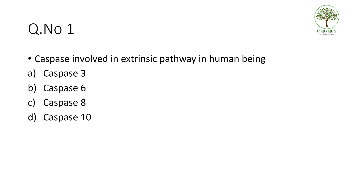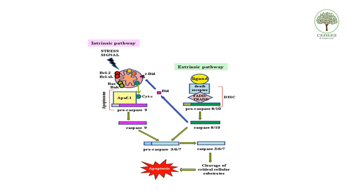In apoptosis, there are the extrinsic pathway and the intrinsic pathway. When it comes to the extrinsic pathway, the key term to remember is FADD — FAS associated death domain — and FAS, which belong to the tumor necrosis factor receptor family.